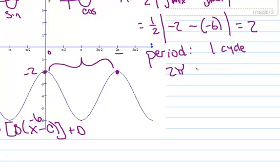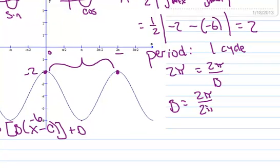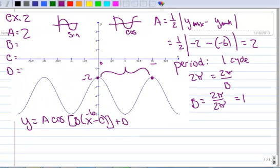If my period is 2 pi, new period equals the pure graph period divided by B, so B equals your pure graph period divided by your new period, which is 1. So B is 1. Be real careful not to say B is 0, because we didn't have a change of period.